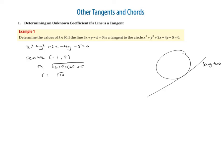So we now know the center is (-1, 2) and the perpendicular distance from the center to the tangent line — which is the radius — is √10. The thing we can use here is the perpendicular distance formula, because we have the perpendicular distance from the line to a point, the equation of the line of the form ax + by + c = 0, and the variable k.